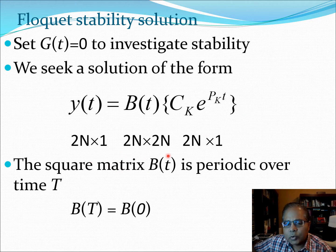Where B(t) is a 2N by 2N matrix. Y(t) we know is a 2N by 1 vector. And the C_K e^(P_K t) term is also a 2N by 1 vector. Now this square matrix we have defined as B(t) is also periodic. So essentially we can say that B at capital T equals B at zero.